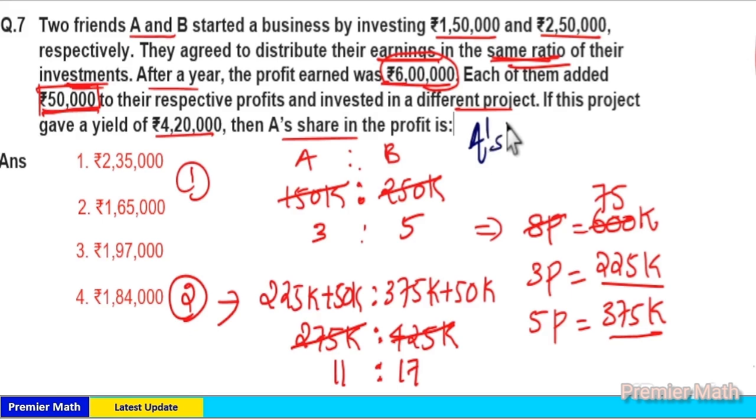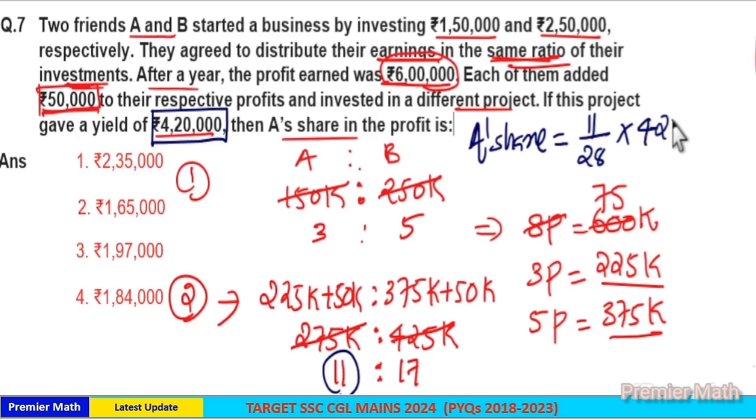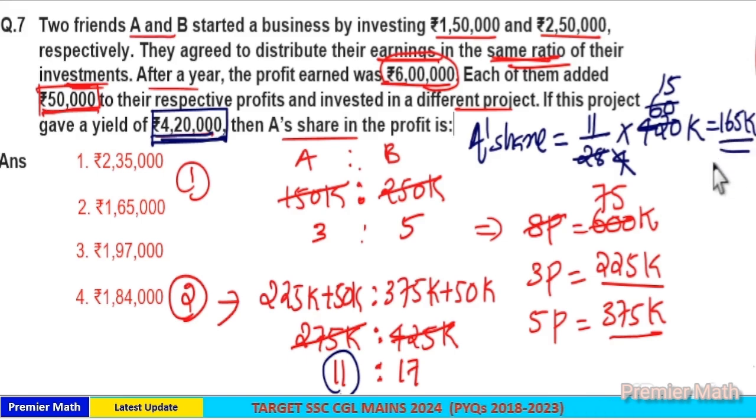Which means A's share is equal to 11 part. So 11 part out of total 11 plus 17, which is 28, into total earnings at the end of the second project which is ₹420,000. For second project, earnings is equal to ₹420,000. Now 7 goes 4 times in 28, 6 times in 42, so 60 times in 420. 4 goes 15 times in 60. So 11 into 15K is equal to 165. 11 into 15 is 165, so ₹165,000. Option 2 is your answer.